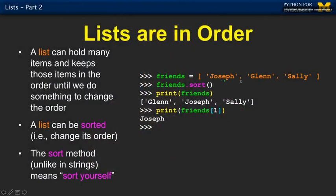But it also means then we can sort them. And so, you know, here we have three things, Joseph, Glenn, and Sally. And we say, hey, friends, sort yourself. This is kind of more object-oriented. We call the sort method within the friend's object.